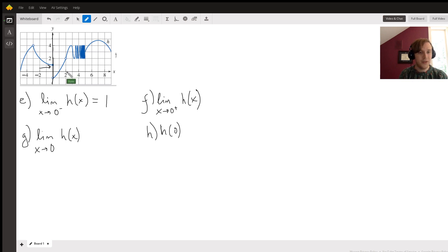So if we approach X equals zero from the right now and follow the graph, trace the graph, we can see that Y is getting closer and closer to negative one. So the limit as X approaches zero plus of H(X) is negative one.